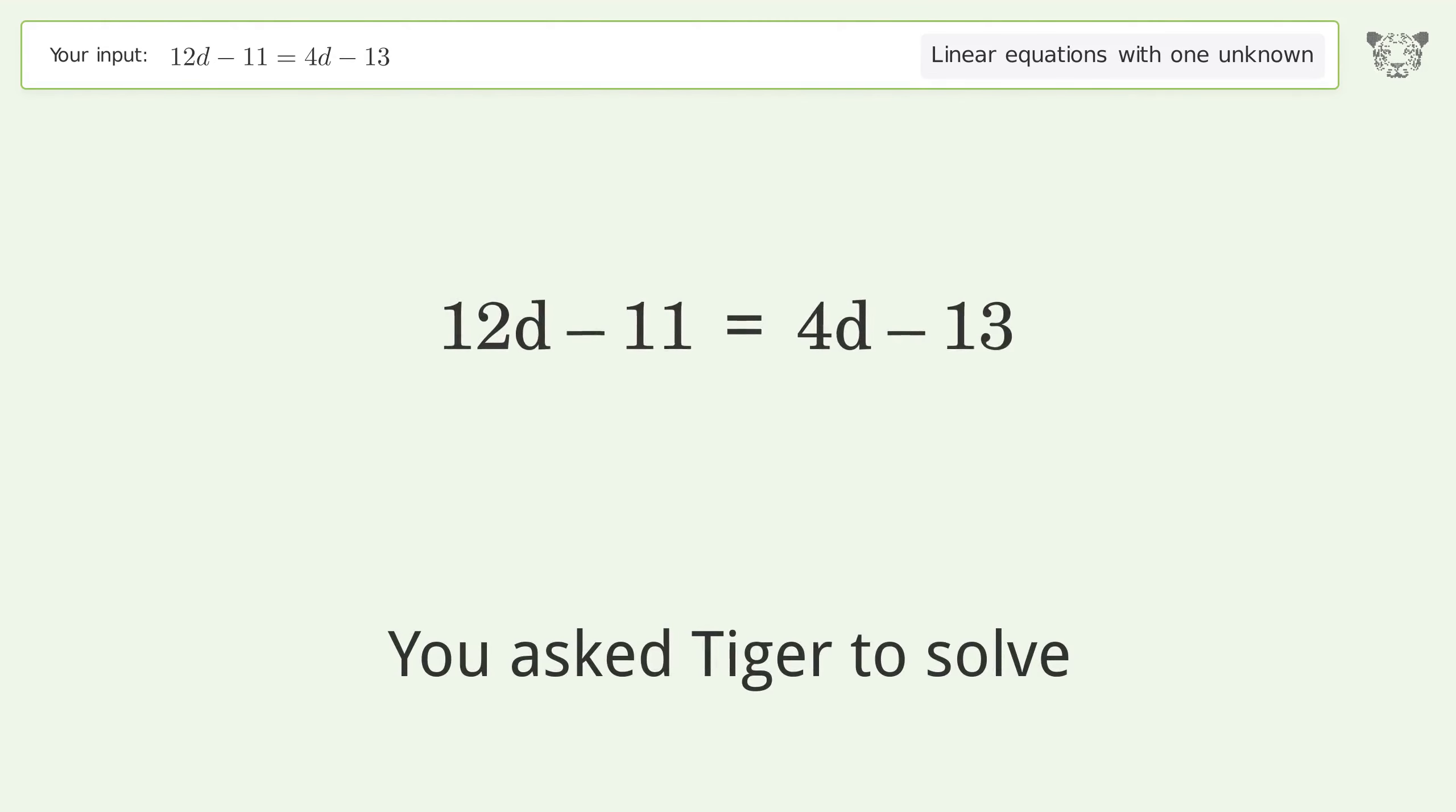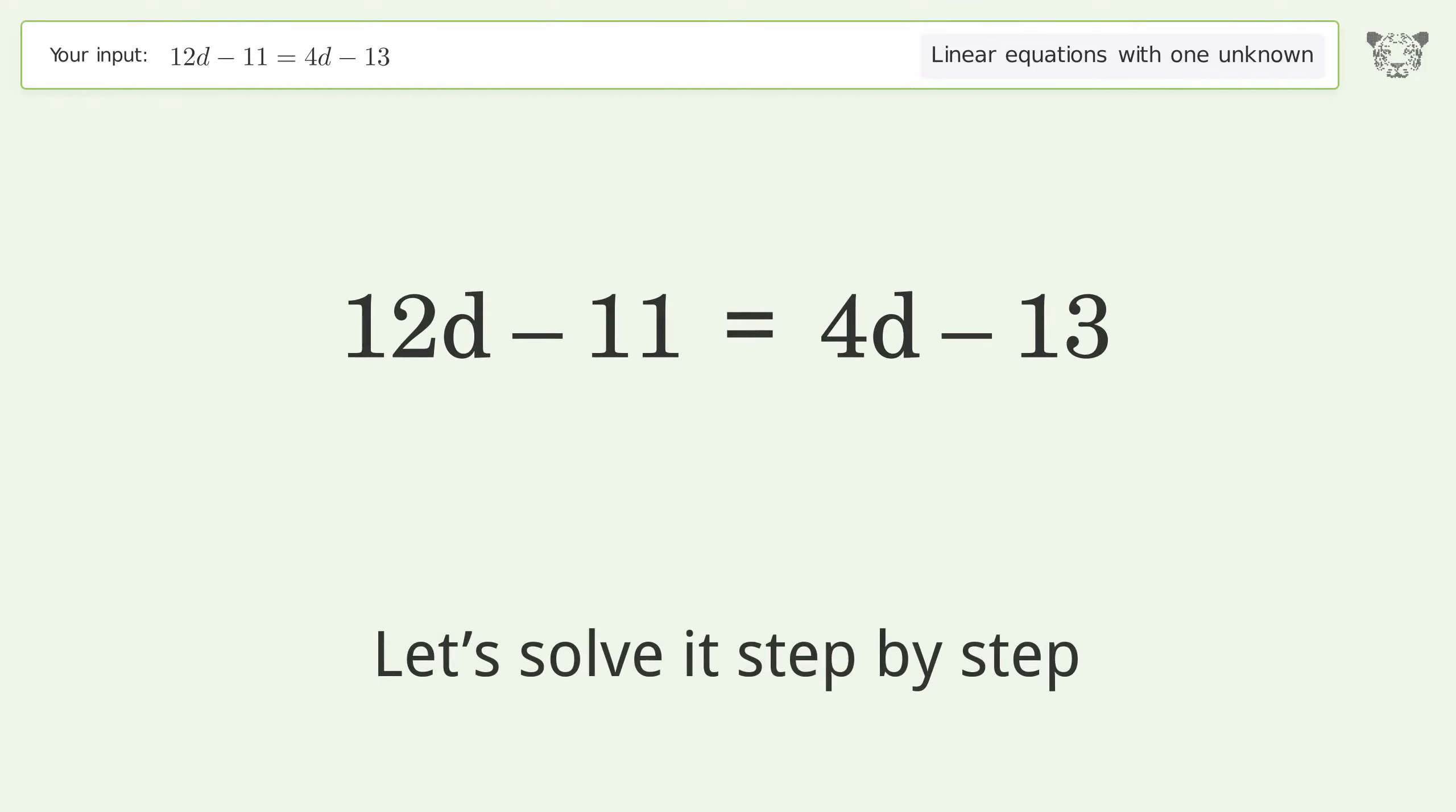You asked Tiger to solve. This deals with linear equations with one unknown. The final result is d equals negative 1 over 4. Let's solve it step by step.